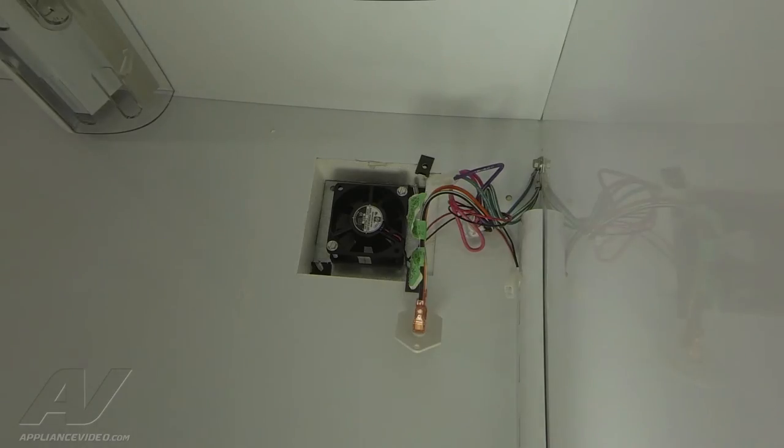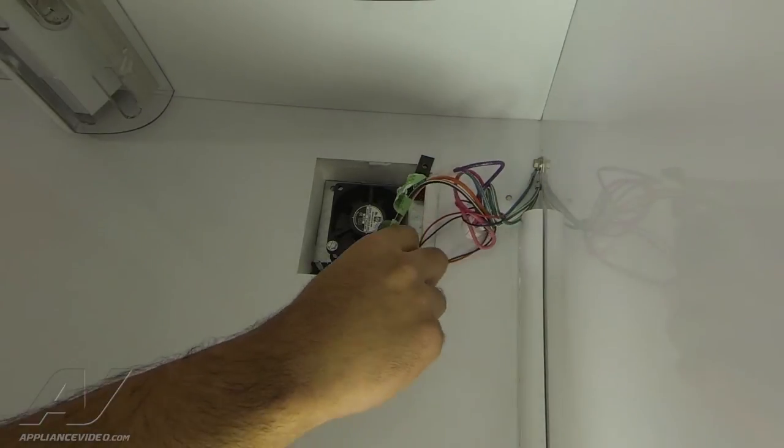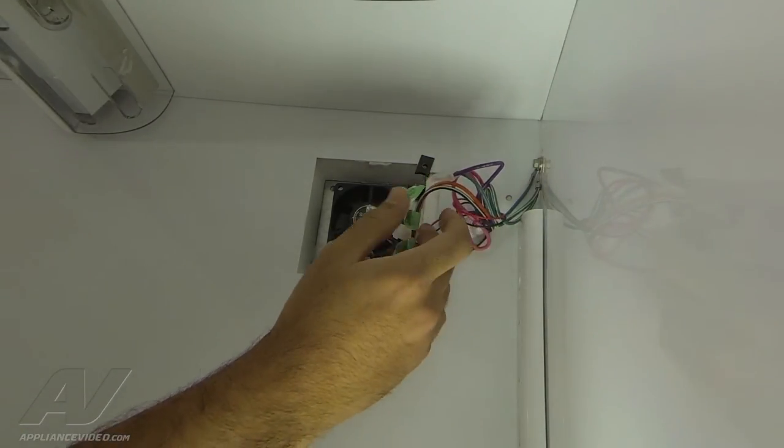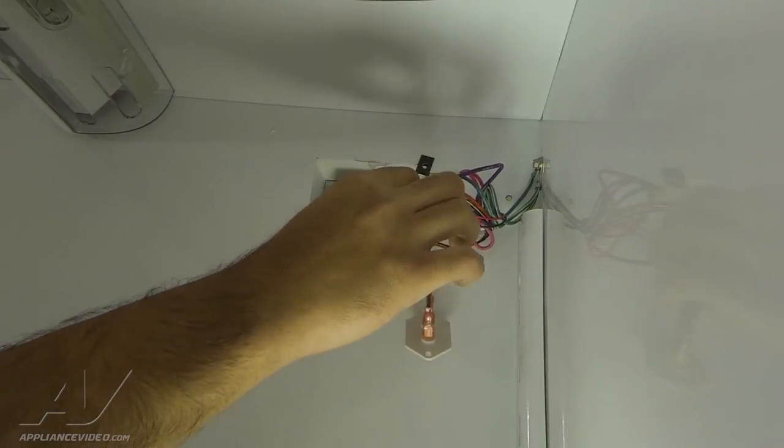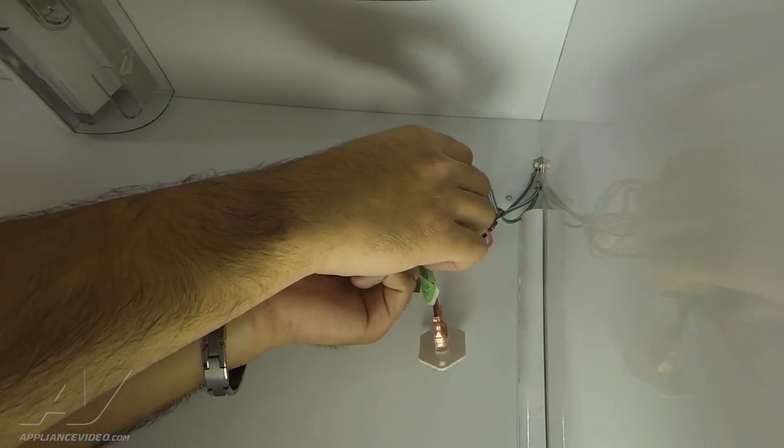Once we've secured the fan bracket into its original position, we can now reconnect the wires that go to the fan motor. There's only one way they can go on—just snap them right in place.